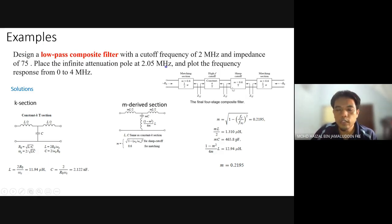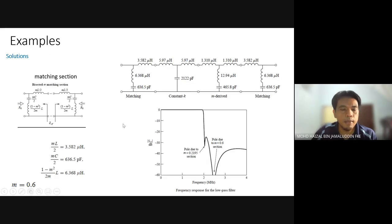We solved two sections for the constant K and M-derived section. Now we move to the matching section. For the matching section, both input and output are similar. We choose M equivalent to 0.6 to calculate all the values. We are able to get 3.5, 636, and 6.368.